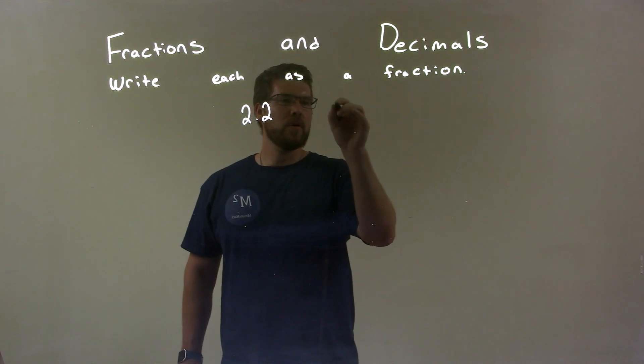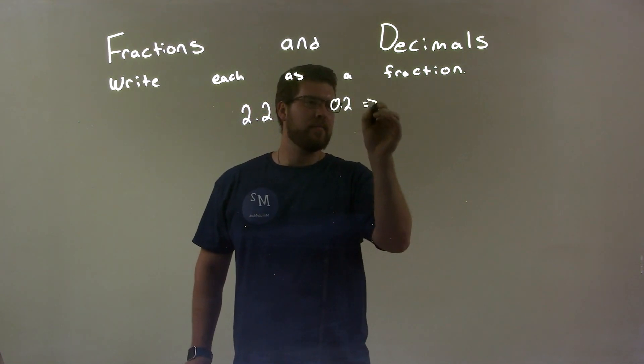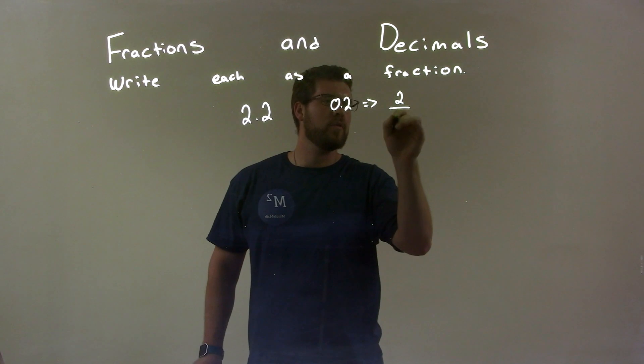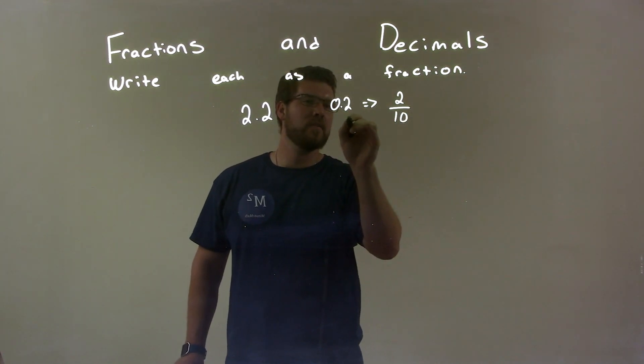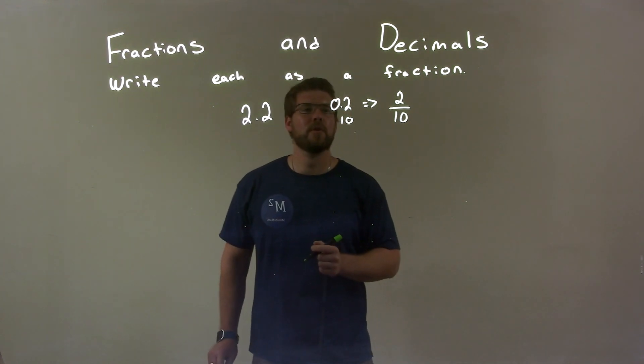So that 0.2, that's the same thing as 2 over 10. So I think of a 1 underneath the decimal, and then a 0. So 1, 0, right? 10. So we have 2 over 10.